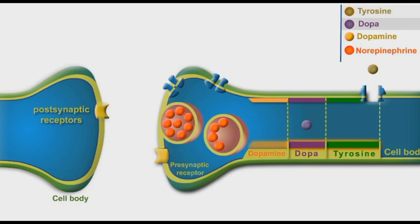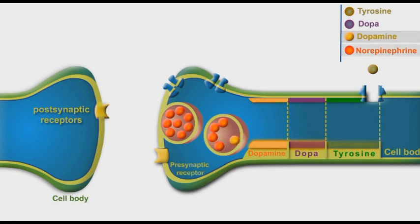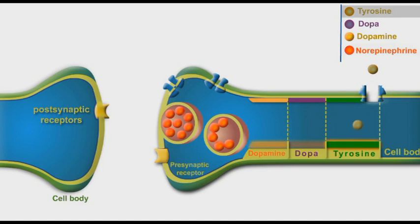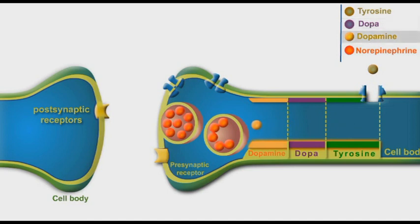The produced DOPA molecules are decarboxylated by DOPA decarboxylase enzyme into dopamine molecules. The dopamine molecules are then stored in storage vesicles, where they are finally hydroxylated by the dopamine hydroxylase enzyme into norepinephrine neurotransmitter molecules.